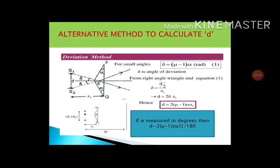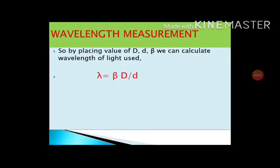By knowing the values of small d, capital D, and beta, we substitute all these values in the formula to determine the wavelength of the monochromatic source of light used. This method is very accurate for finding the value of wavelength.